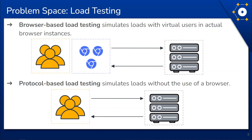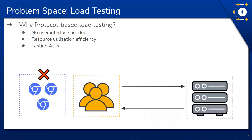The goal of browser-based testing is to simulate actual user behavior flows or transactions in an application. An example would be a user logging into Amazon and going through the checkout process for a purchase. Protocol-based load testing, on the other hand, simulates loads to servers using the underlying network protocol without a browser — for example, virtual users sending HTTP requests to Amazon without using a browser and then measuring the website response.